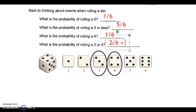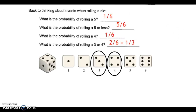What you should know about probability is that it is always expressed in its simplest form. Two over six is a fraction that can be simplified — if we divide the numerator and denominator by two, we get one divided by three.